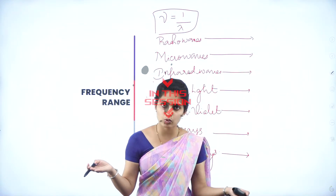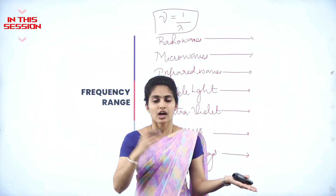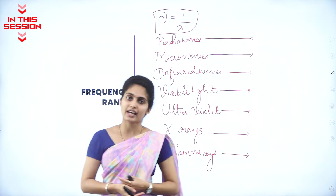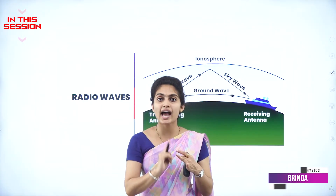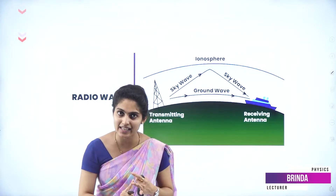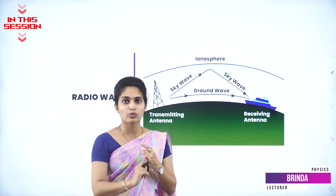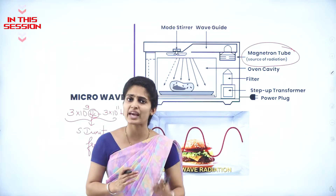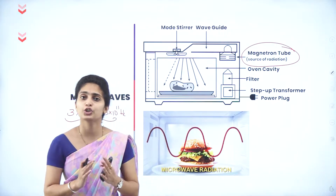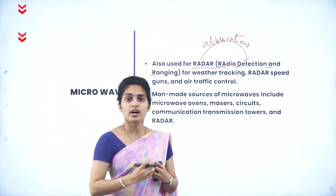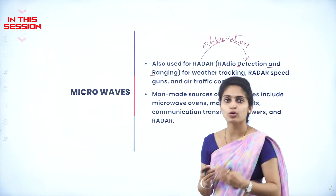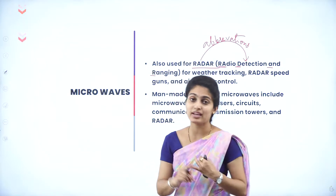Frequency is inversely proportional to wavelength — however frequency acts, the opposite is true for wavelength. Sky wave is the one which acts between the ionosphere and the earth, and ground wave is the one which acts on the surface. Long-term exposure to any electromagnetic spectrum is very harmful to a human body. Radar is used to measure the depth of objects which lie at a certain depth, possibly under a sea.